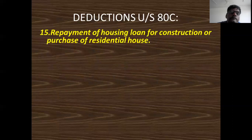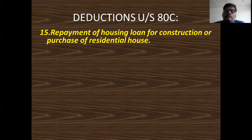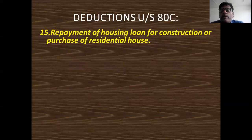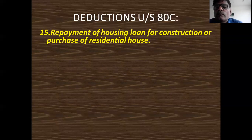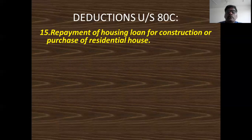The fifteenth item is repayment of housing loan for construction or purchase of a residential house. Regarding this, in your income from house property, interest on loan paid is an allowable deduction covered under house property head. But the principal amount you cover under this point — Section 80C. Remember: repayment of housing loan — only principal amount is covered here; interest is covered under house property head.